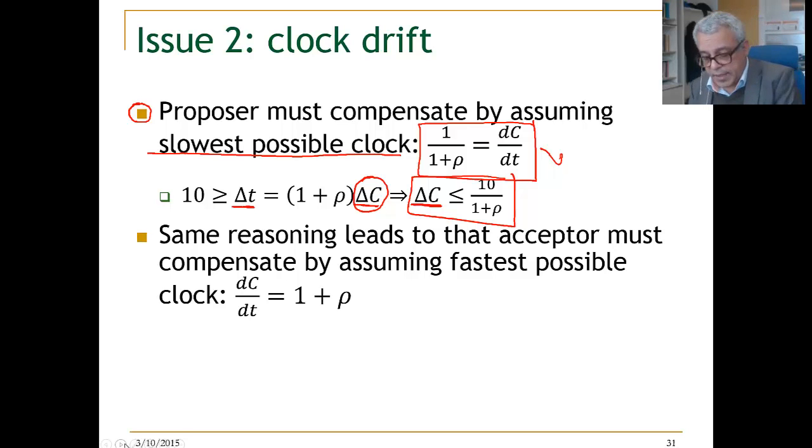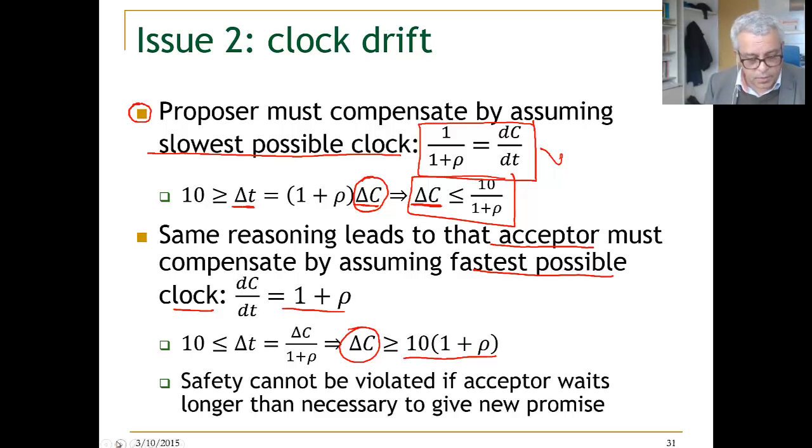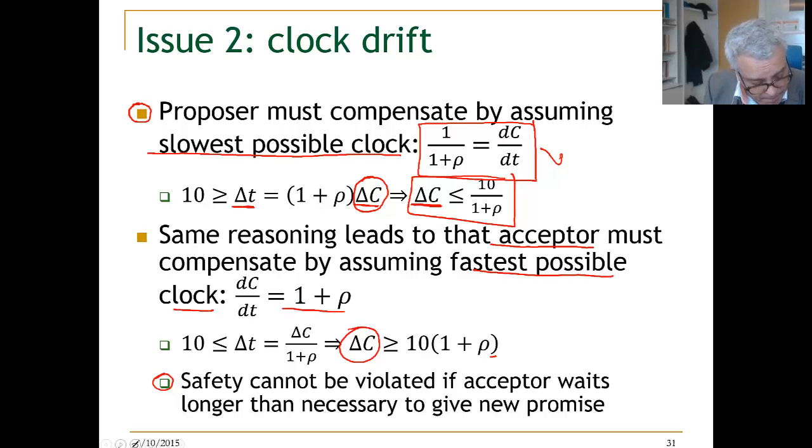By the same reasoning, actually, the acceptor should compensate assuming the fastest possible clock, which again would mean that the acceptor will extend a little bit the time period that he is giving for the proposer to compensate for the error in the clock, in his own clock. By the same reasoning, we get here that the period should be greater than or equal 10 times 1 plus rho. And the reasoning, we know that safety cannot be violated if the acceptor waits longer than necessary to give a new promise.